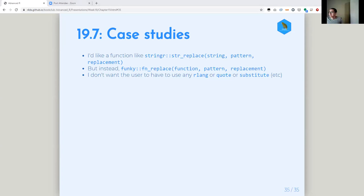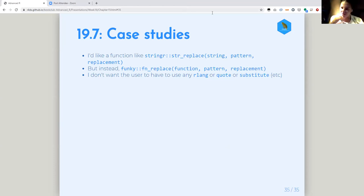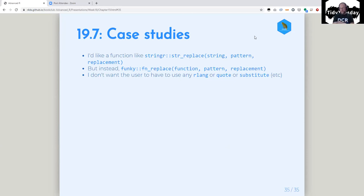I feel like this stuff doesn't really stick for me until I see it in the wild. So I want a function that's like string_replace — takes a string, pattern, replacement — but instead takes a function, a pattern, and a replacement. I actually have a version of this already inside a factory. I want something more robust, so we're going to make it. The part of the idea is I don't want the user to have to quote anything or use any rlang or do anything fancy.